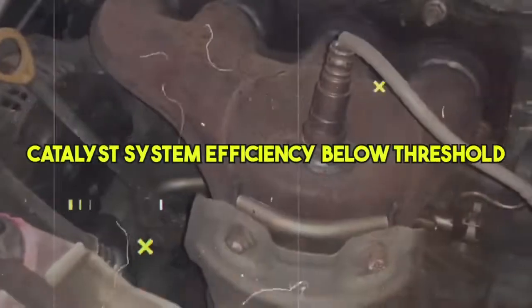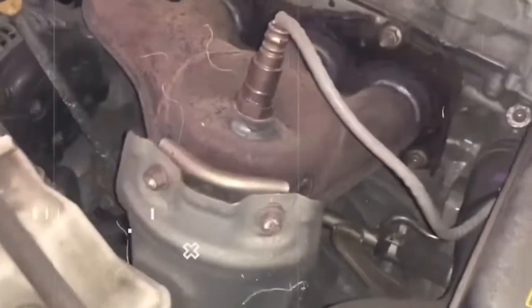The P0420 code is a Diagnostic Trouble Code (DTC) for Catalyst System Efficiency Below Threshold, meaning that the vehicle's emissions output may be higher than normal.